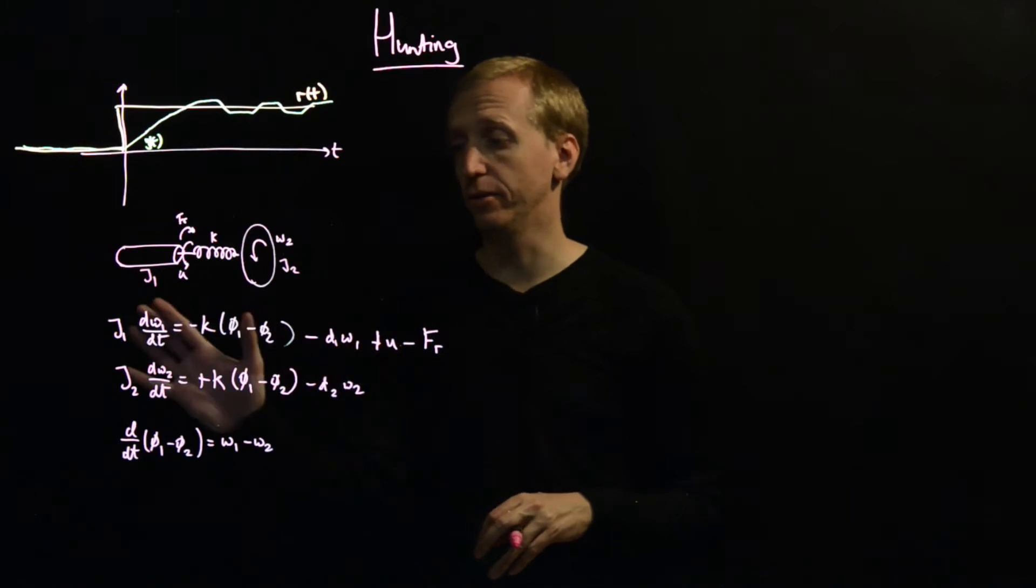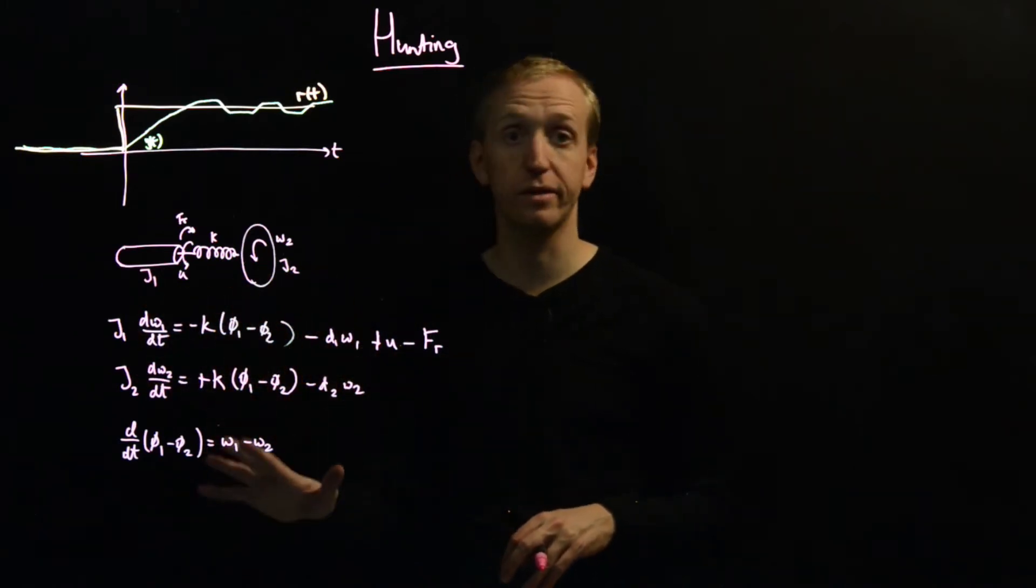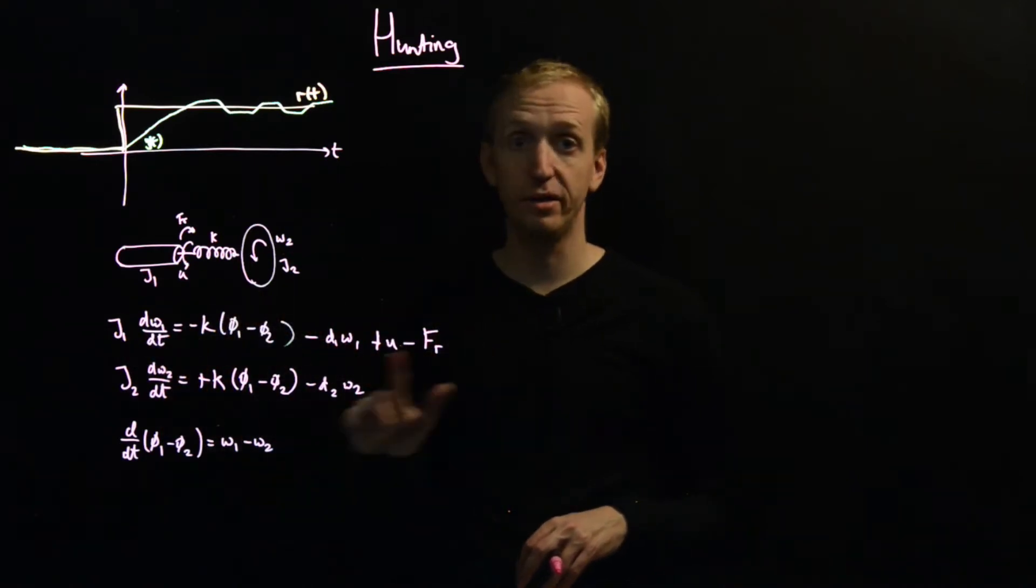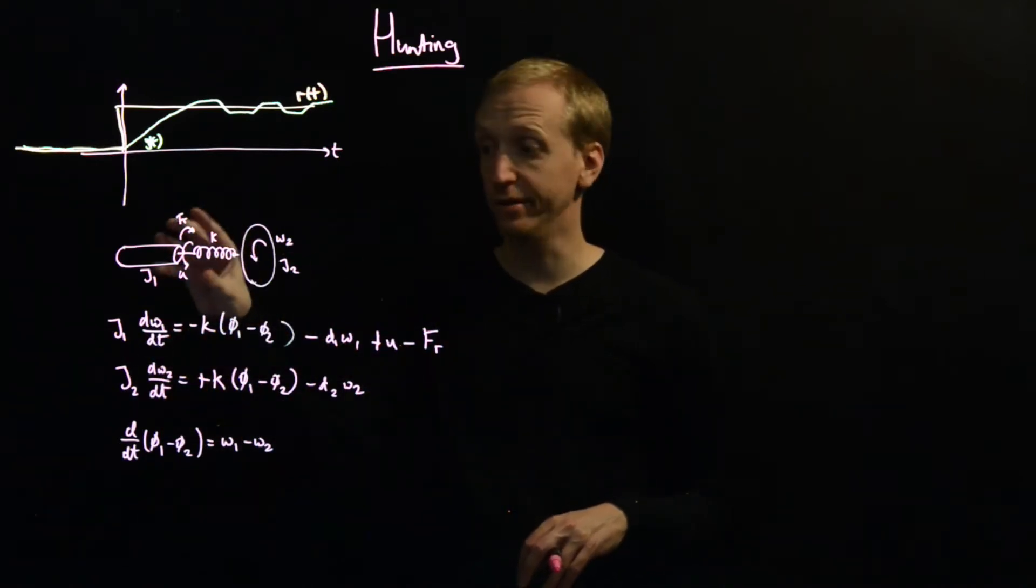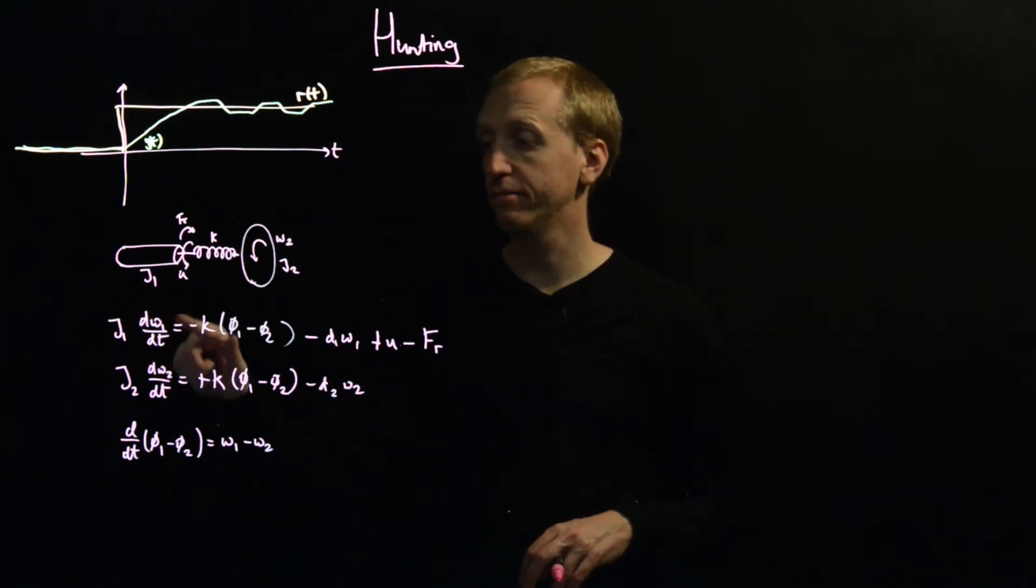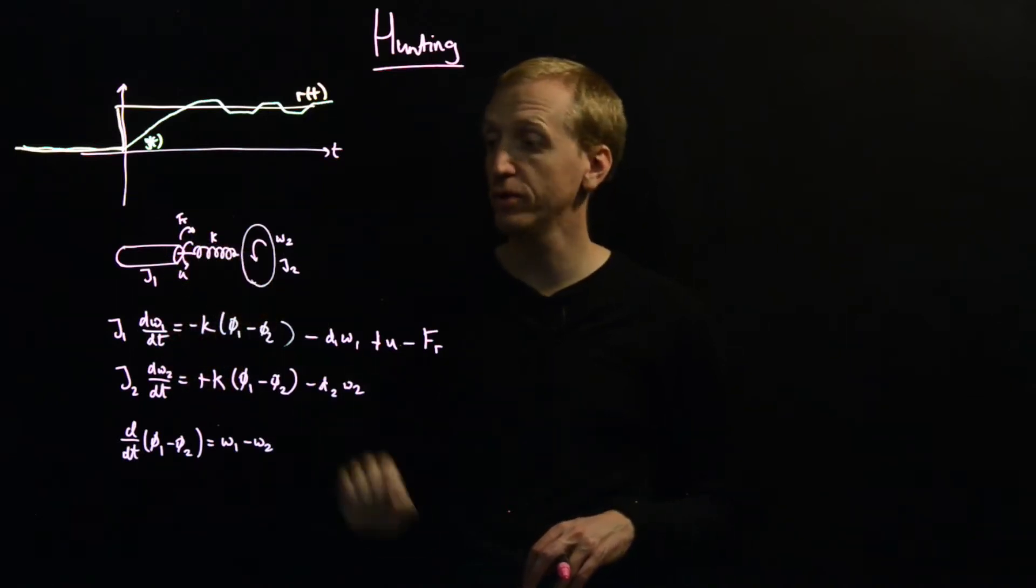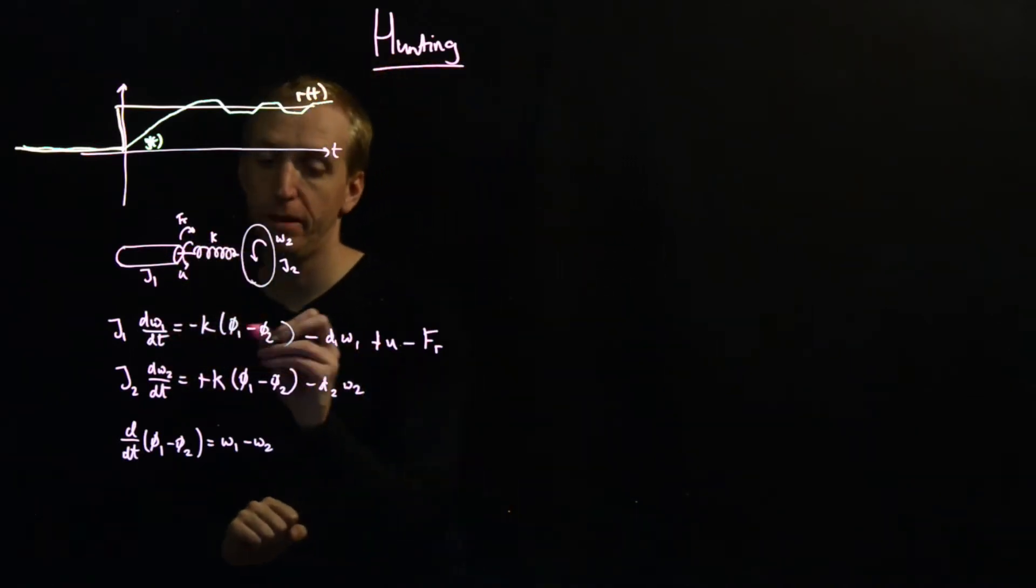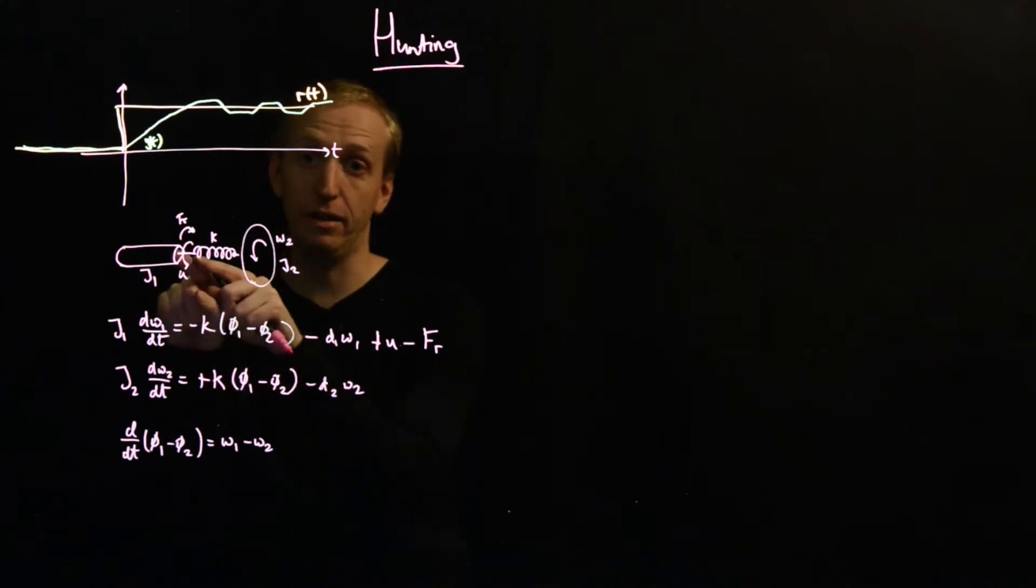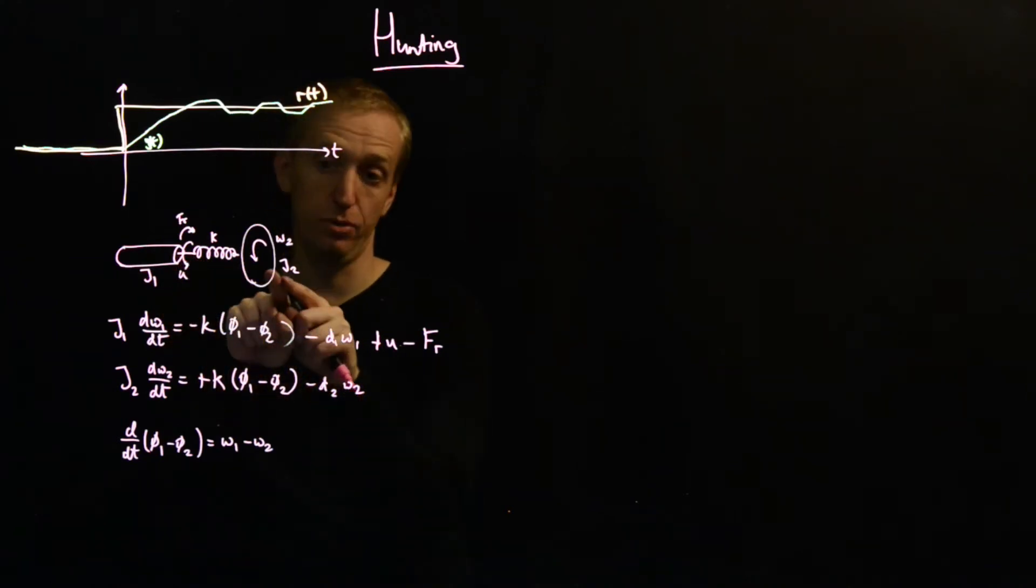And if you go through things and you write down the equations of motion, you get something that looks like this. So the first equation here, this is describing Newton's law when applied to the motor. So we have the moment of inertia and then the d omega 1 by dt. So omega 1 is the angular velocity of the motor. This is the spring force coming from this torsional spring. Phi 1 is the angular position of the motor. And phi 2 is the angular position of the load.